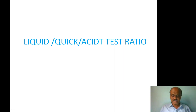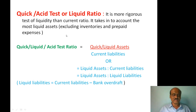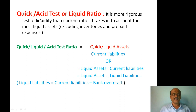The liquid ratio is a more rigorous test of liquidity than the current ratio. It takes into account the most liquid assets, excluding inventories and prepaid expenses from the current assets. In the case of the current ratio, we take into consideration all current assets including inventory and prepaid expenses.